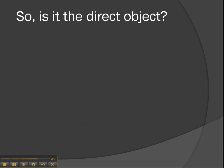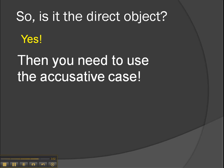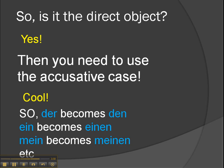So let's summarise. Is a word the direct object? Yes — then you need to use the accusative case. 'der' becomes 'den,' 'ein' becomes 'einen,' 'mein' becomes 'meinen,' and so on. That's it. Good luck with it.